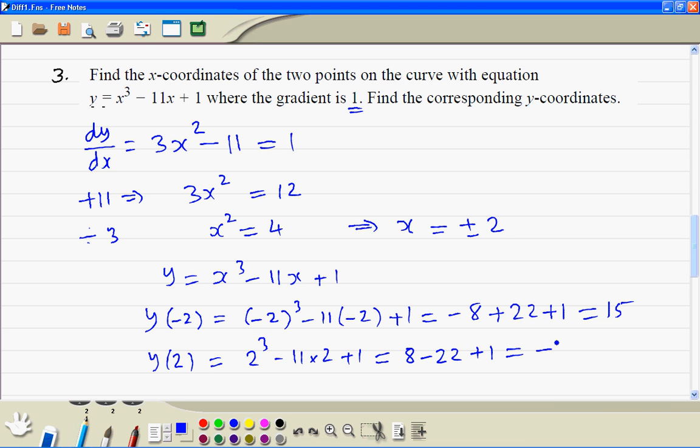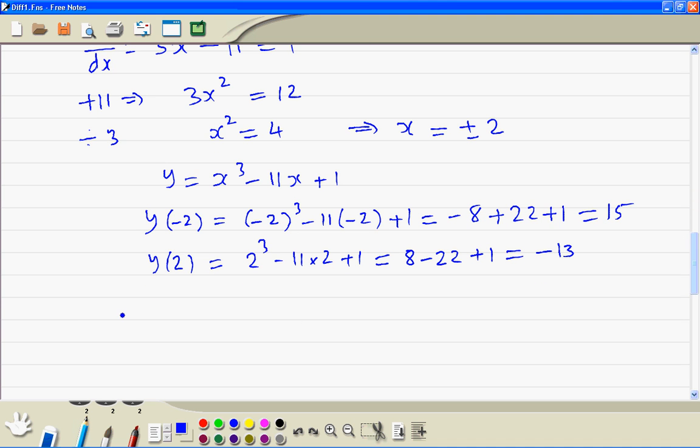This is minus 13. So we've got two sets of coordinates, so the solution: when x is minus 2, y is 15, and when x is 2, y is minus 13.